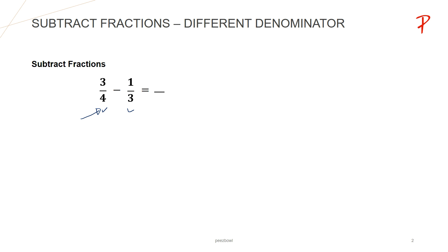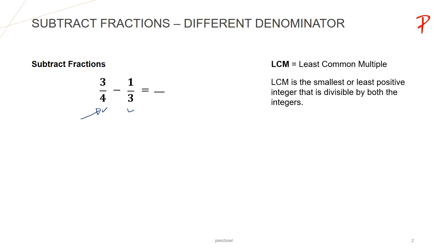To find a common denominator, we will find out the LCM — that is, the least common multiple — of both the denominators 4 and 3. LCM is the smallest or least positive integer that is divisible by both the integers. So first we will write a few multiples of 4, which are 4, 8, 12, 16, and so on.